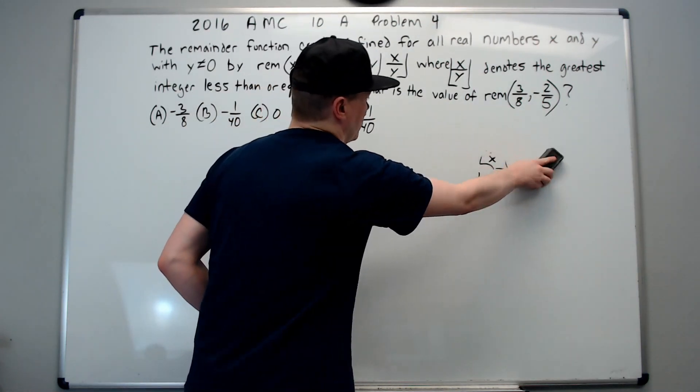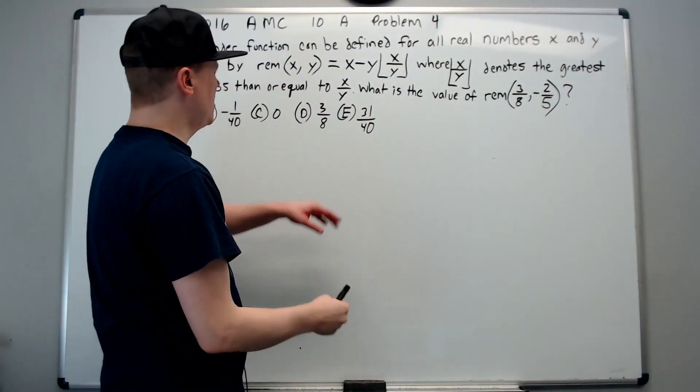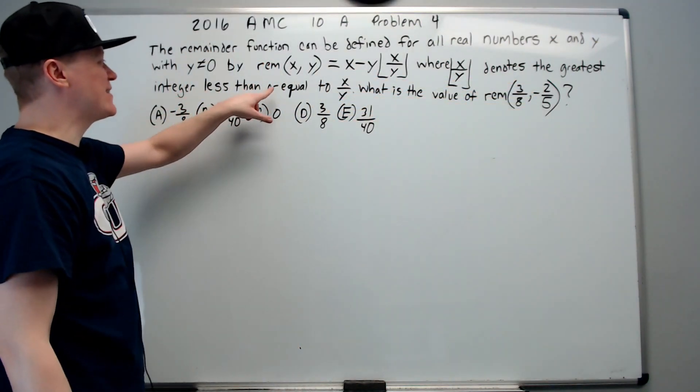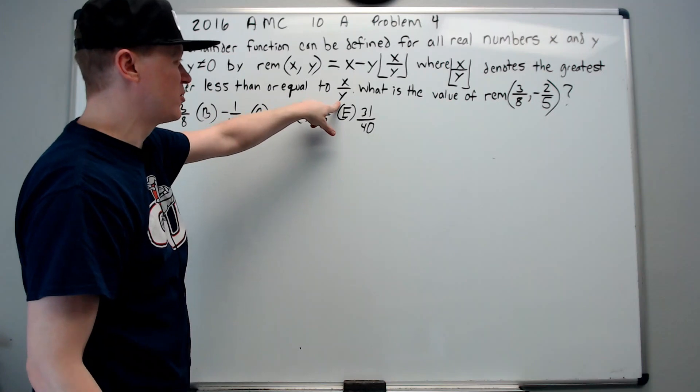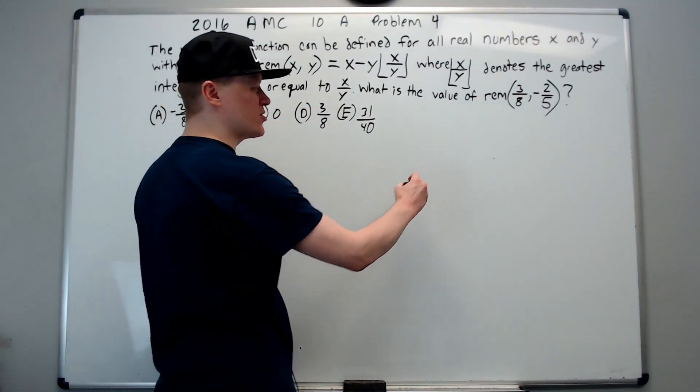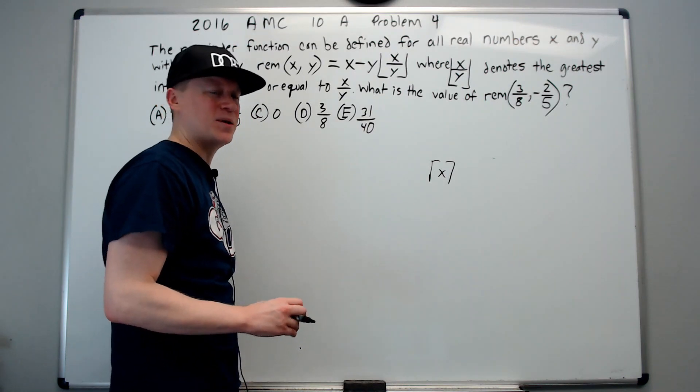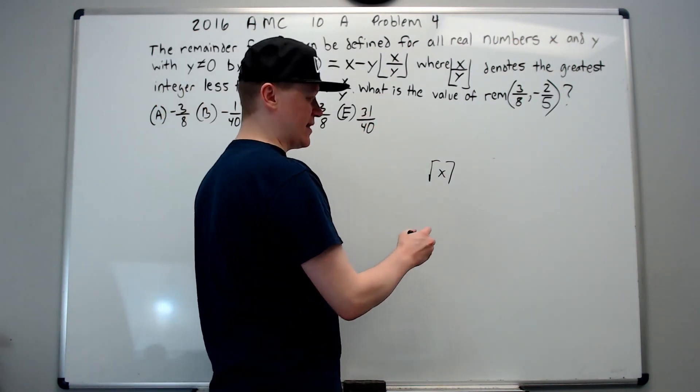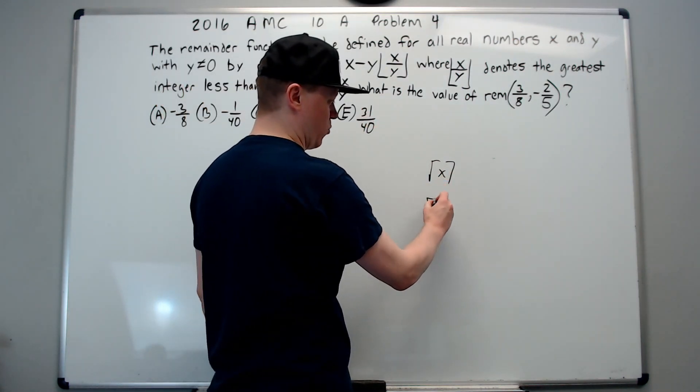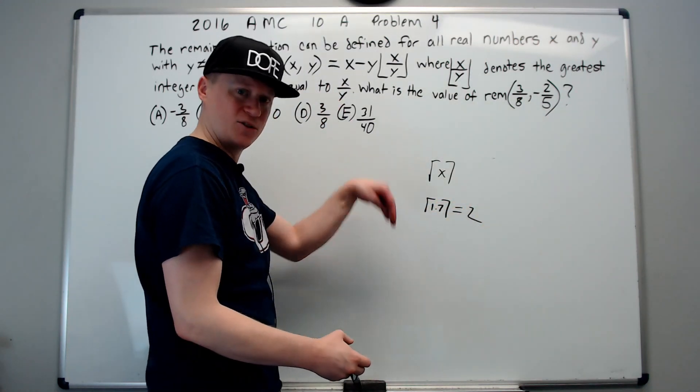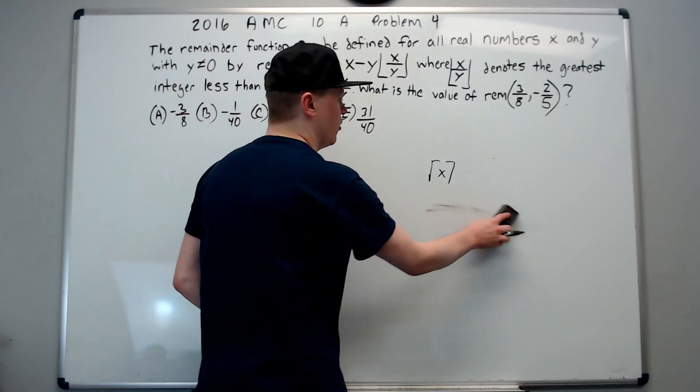This expression where that denotes the greatest integer less than or equal to x over y. One other side note. There's also a ceiling function, which you don't see as often, but it means round up. If you put 1.7 in there, it rounds up to 2. Ceiling up, floor down. It makes sense.